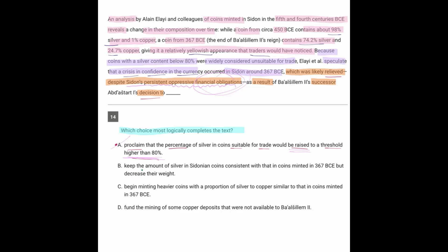Looking at B, the decision was to keep the amount of silver consistent with that in the coins minted in 367 BC, but decrease their weight. Well, that's going to end up being the answer, by the way. And the reason why is because in 367, there was a certain amount of silver.